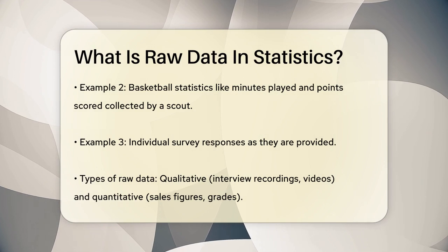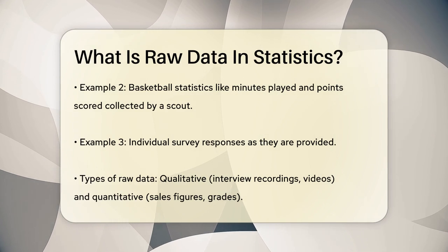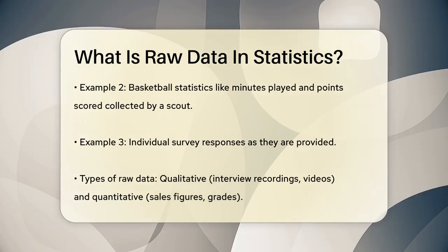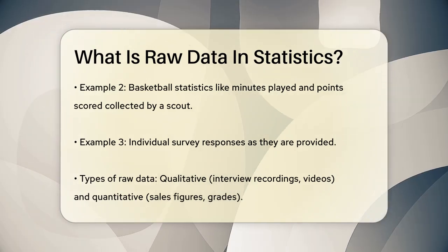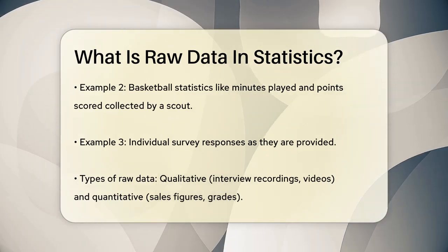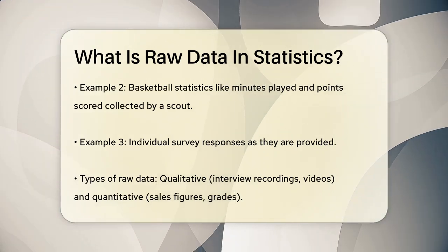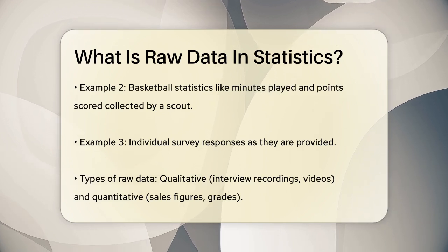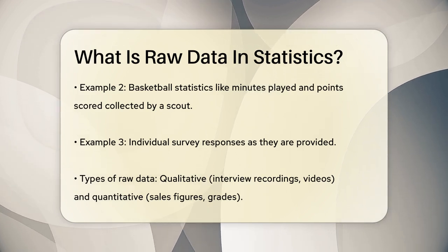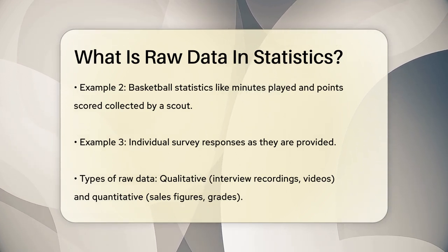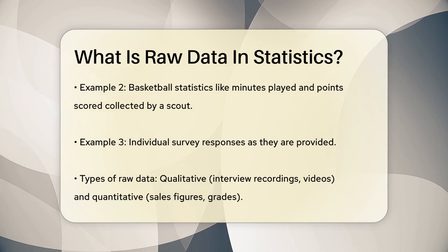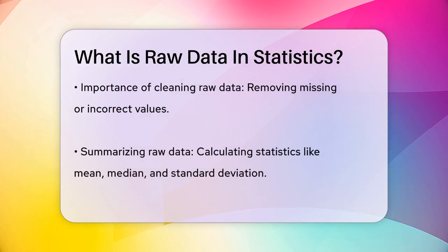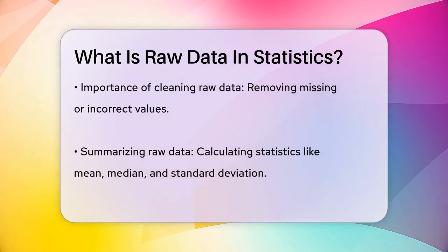Raw data can be either qualitative or quantitative. Qualitative data includes things like interview recordings, videos, or transcripts, while quantitative data involves numbers, such as sales figures, student grades, or the amount of money collected for an event.